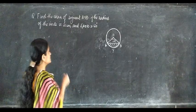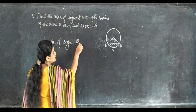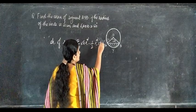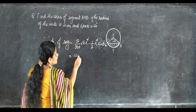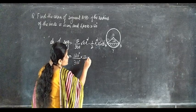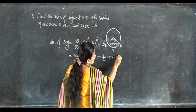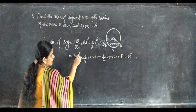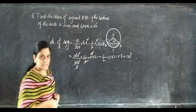Now we have to find the area of the segment. Area of segment equals theta by 360 into π r square minus half r square sine theta. Theta is 120 degrees: 120 by 360 into 22 by 7 into 21 into 21 minus 1 by 2 into 21 into 21 into sine 120 degrees. Cancel: 120/360 gives 1/3, and 7 cancels with 21.